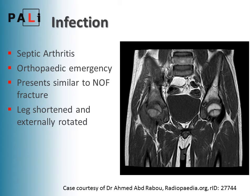Septic arthritis is an orthopaedic emergency. It presents similarly to a fractured neck of femur, where the leg is shortened and externally rotated, but it can also be hot and inflamed. Staph aureus is the most common causative organism. As you can see on this MRI, the right hip bone is really quite damaged with pus sitting around it — it's quite destructive.